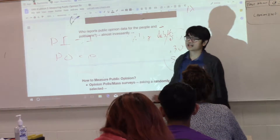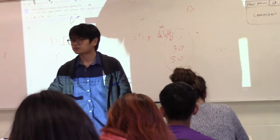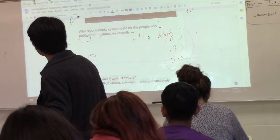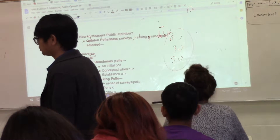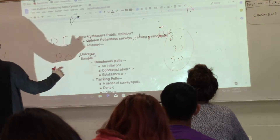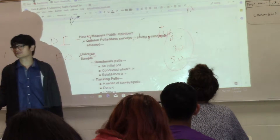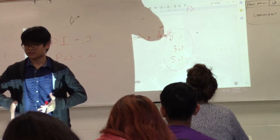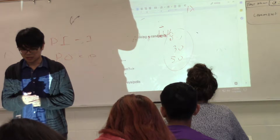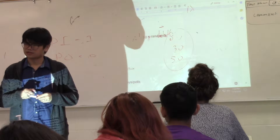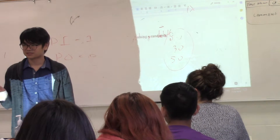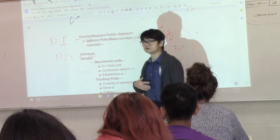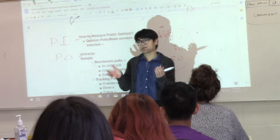The question today is: how do we measure public opinion? How do we know what people think about a particular issue or candidate? The number one way people use is opinion polls or mass surveys. What opinion polls do is ask a randomly selected group of people, and that group represents an entire population. A lot of this is going to sound familiar to those of you in stats.